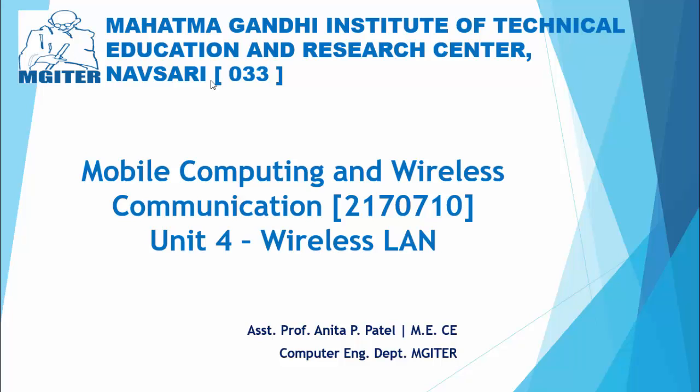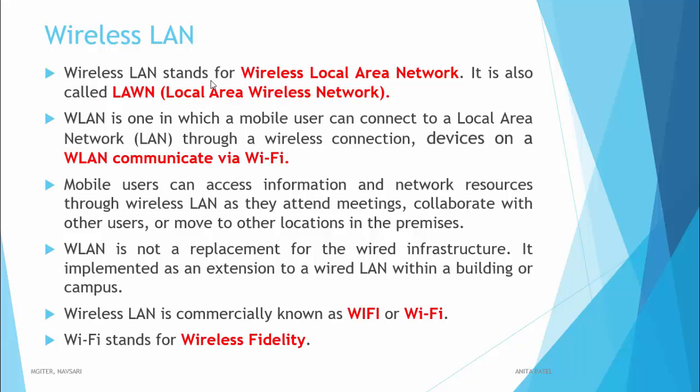Wireless LAN is a local area network without any physical connectivity — without wires. WLAN stands for Wireless Local Area Network. It is also called LAWN, which means Local Area Wireless Network. A WLAN is one in which a mobile user can connect to a local area network through a wireless connection. Devices on a WLAN communicate via Wi-Fi, which stands for Wireless Fidelity.